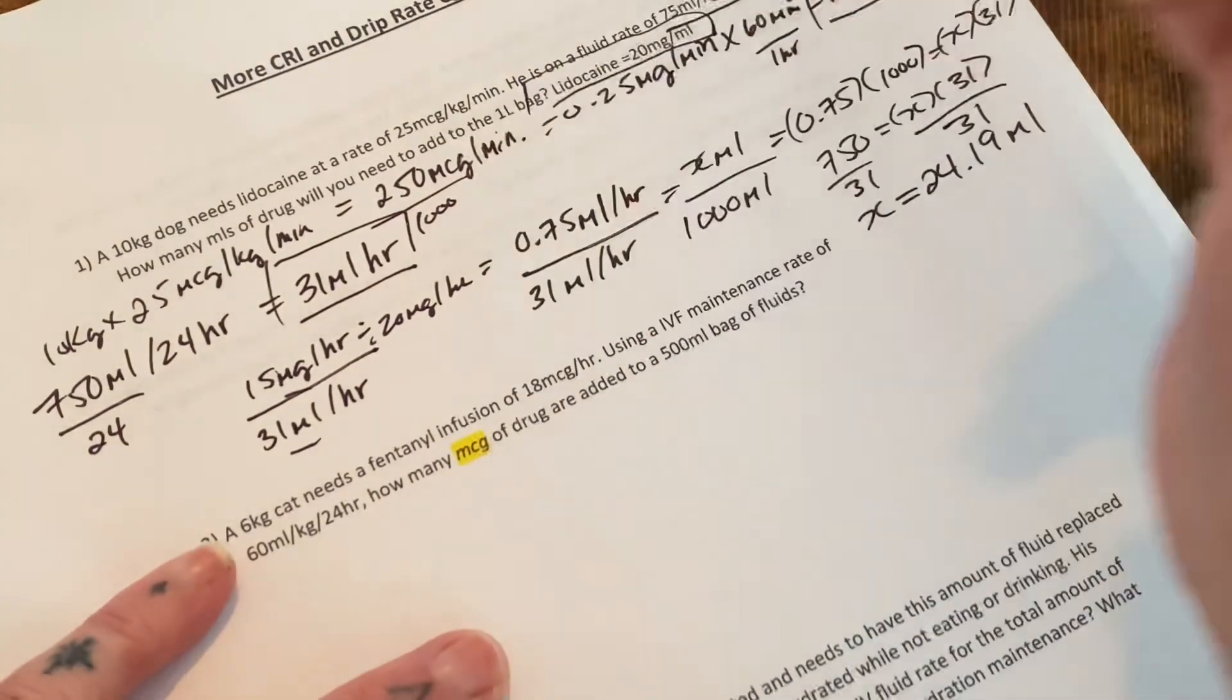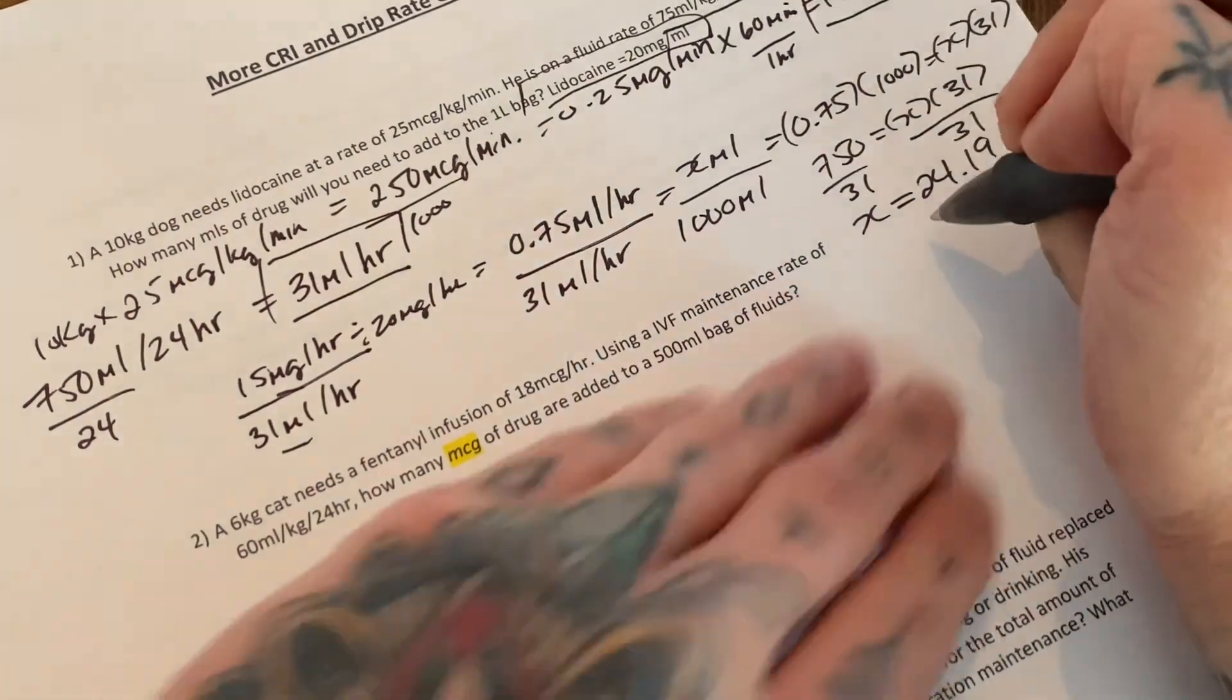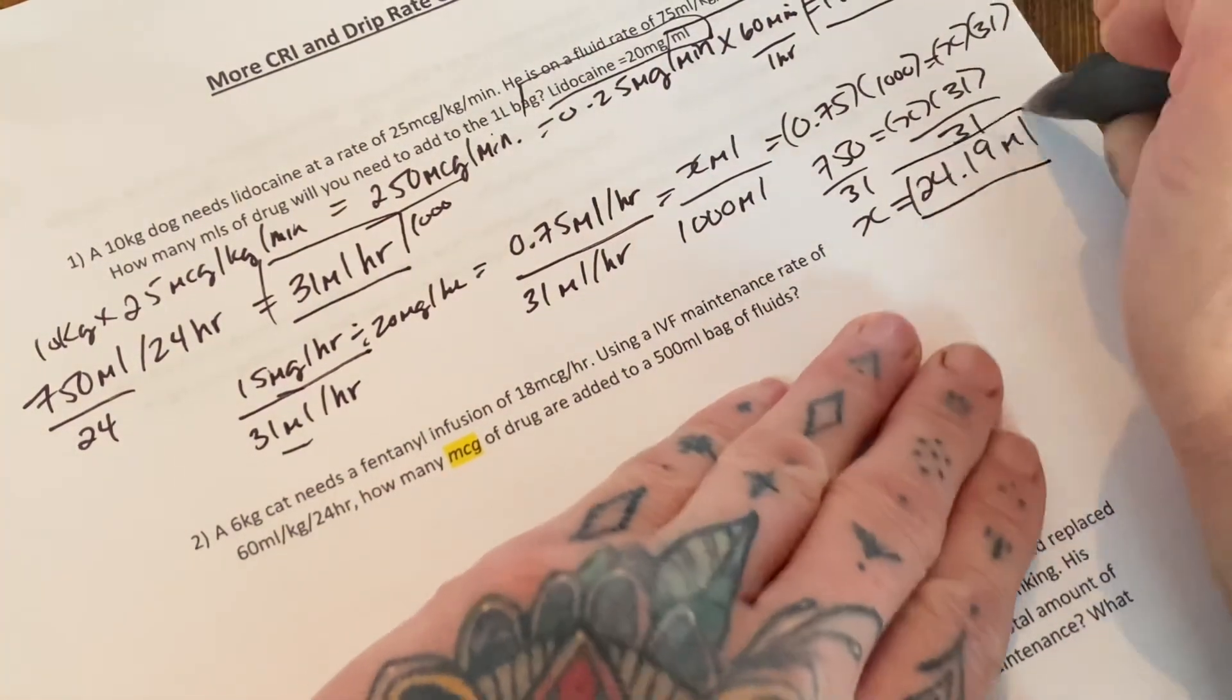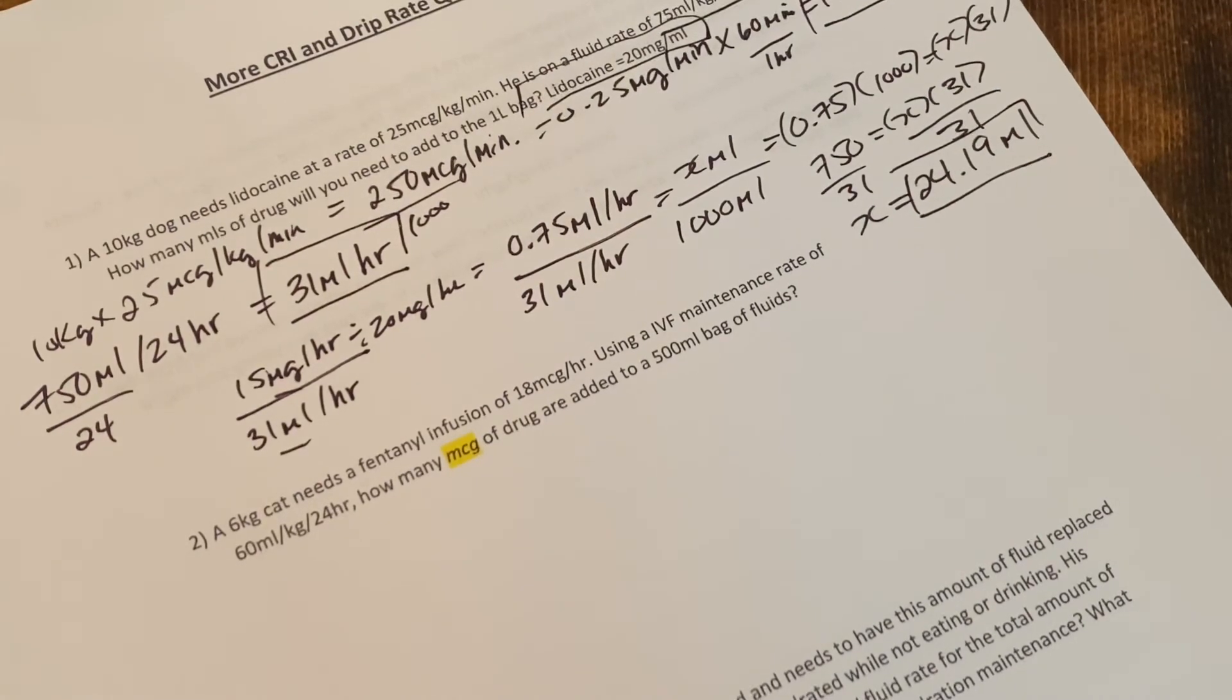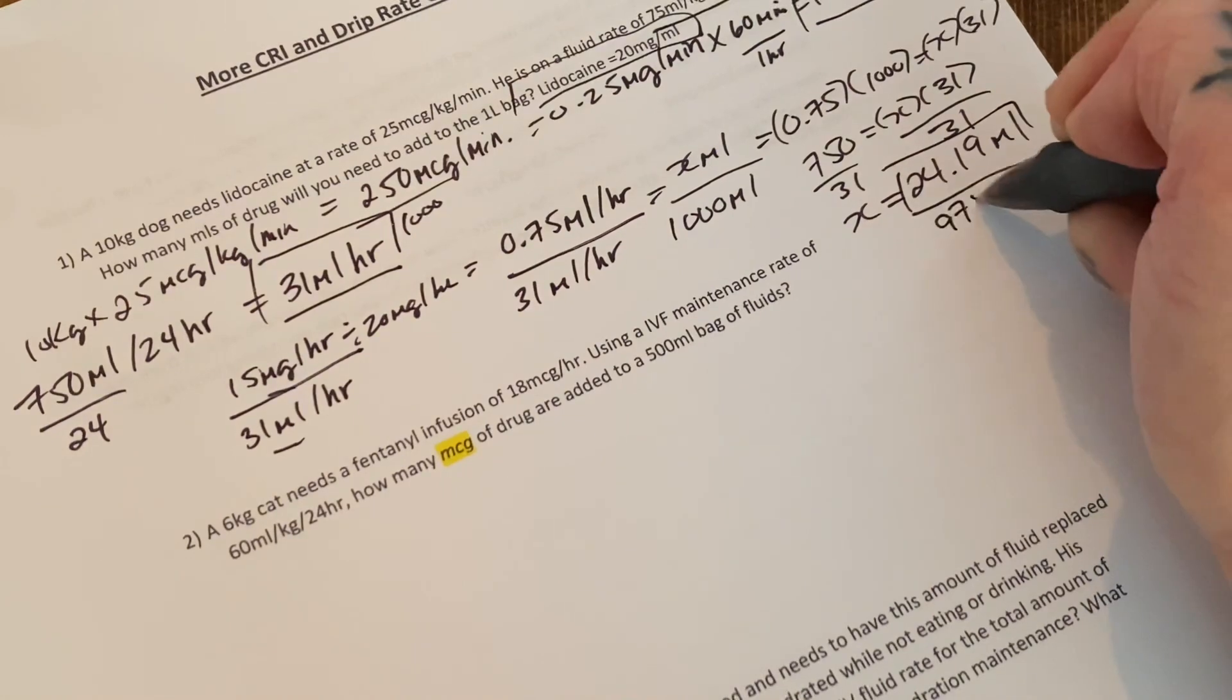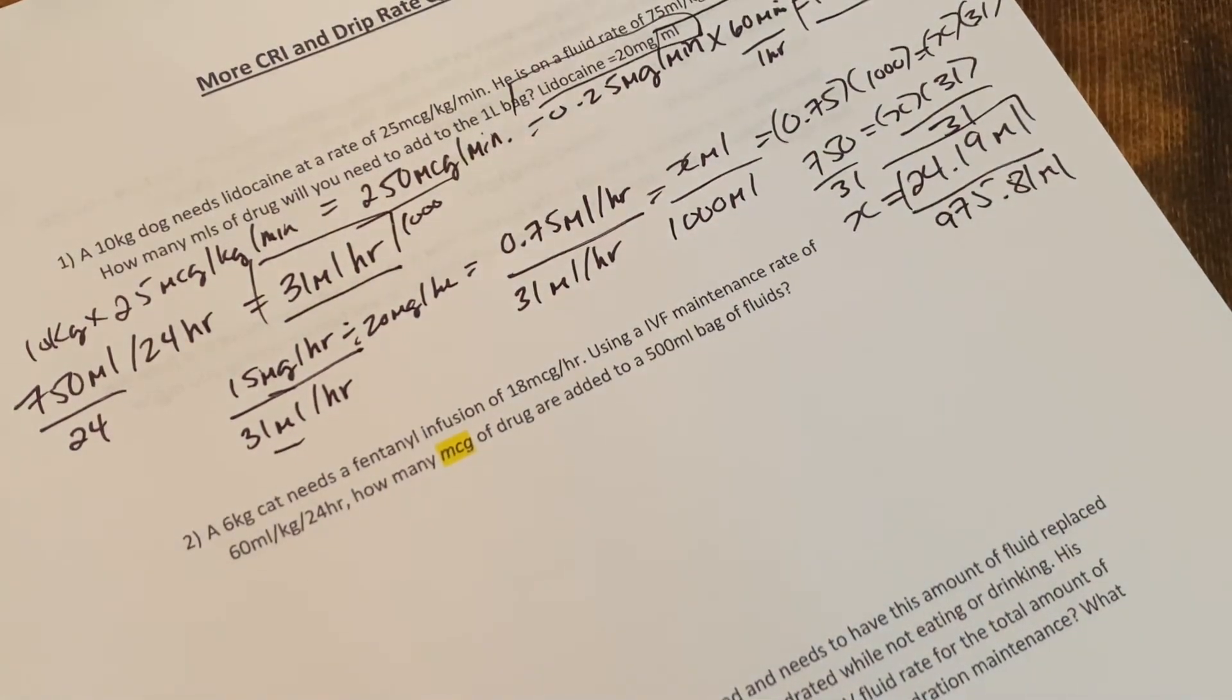So then you need to do the last step, which is sometimes forgotten, which is removing this amount from the one liter. So thousand mils minus 24.19. So you'll be putting in 24.19 mils into 975.81. So that's how you would do that one.